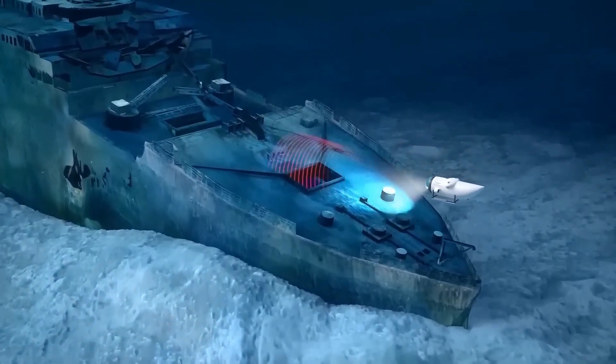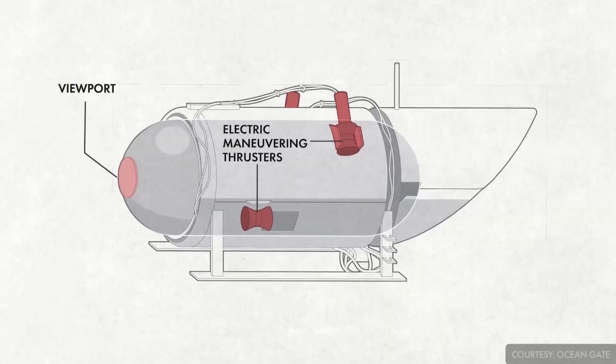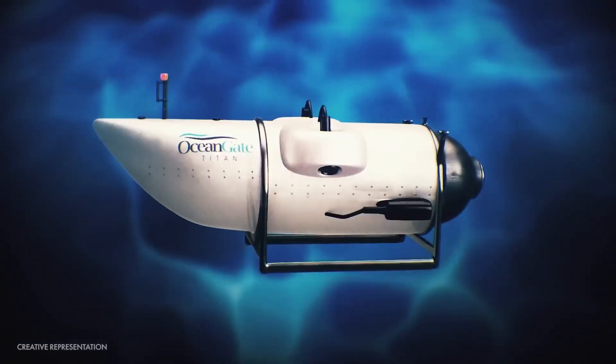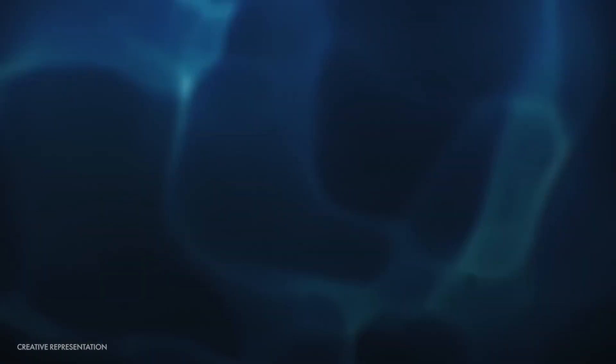Titanic's ship wreckage is about 3,800 meters deep inside the sea, where the water pressure would be approximately 1.5 tons per square inch. Under this extreme pressure, with constant fatigue stress and the use of wrong material, would likely lead to failure of the hull.